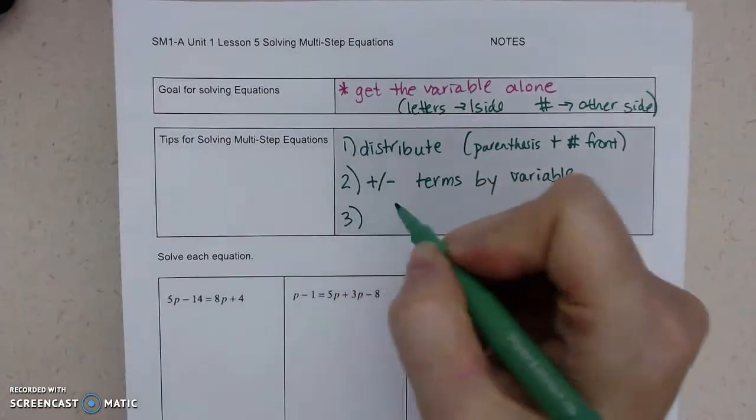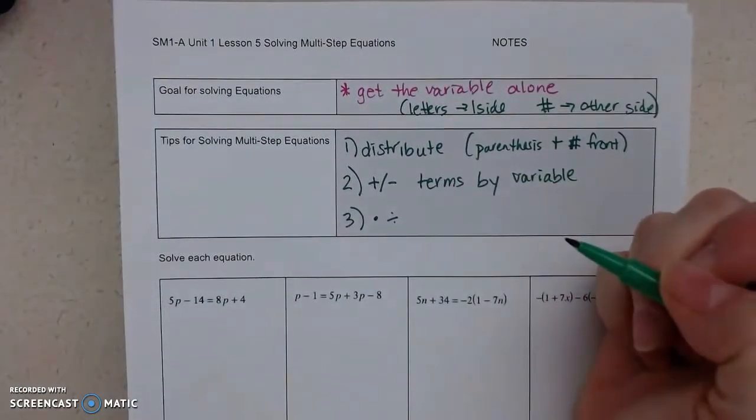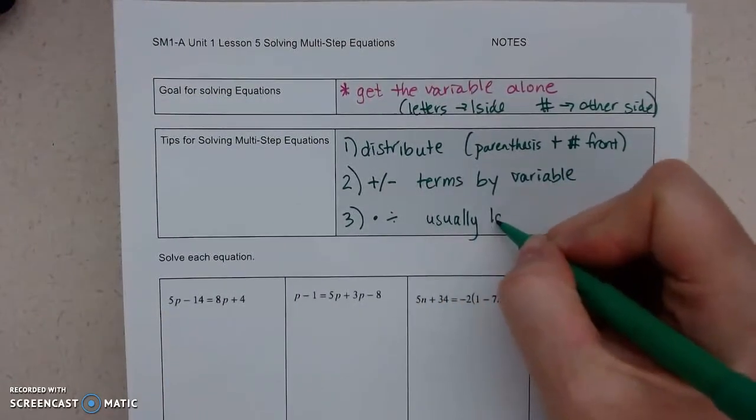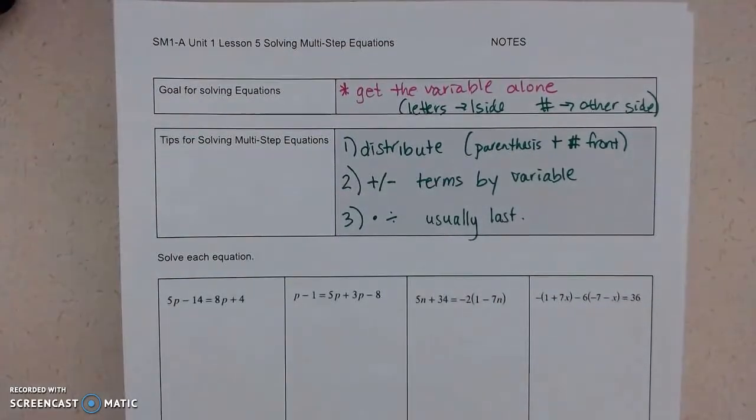And then last, we usually multiply or divide to isolate the variable. And I'll say usually because remember there are some exceptions. All right, so that's a good goal.